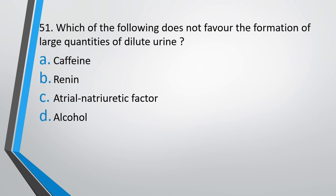Question number 51: Which of the following does not favour the formation of large quantities of dilute urine? Caffeine, renin, atrial natriuretic factor, or alcohol? The correct answer is Option B — renin.